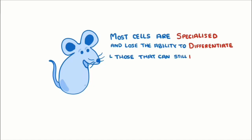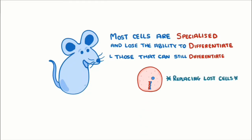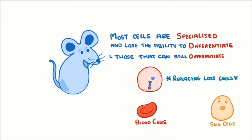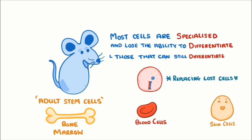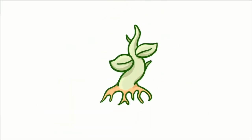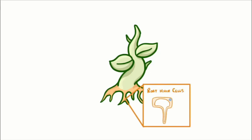The few cells that can still differentiate are used for replacing lost cells, such as skin cells and blood cells. One of the remaining undifferentiated cell types, called adult stem cells, are found in the bone marrow — even they can only differentiate into different types of blood cells. In plants, things are a bit different. They also have specialized cells: root hair cells designed to collect water and nutrients.